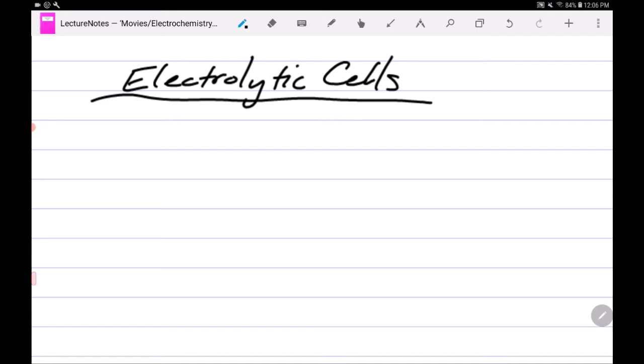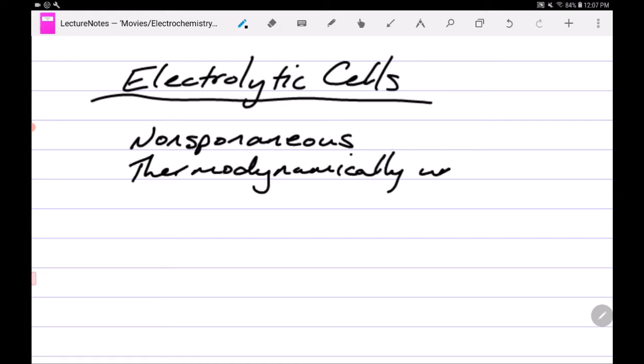A galvanic cell is one in which the reaction is spontaneous. An electrolytic cell is one in which the reaction is non-spontaneous, which in terms of E-naught would be positive and in terms of delta G-naught would be negative.